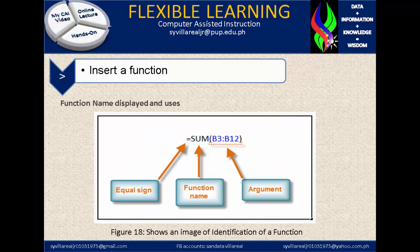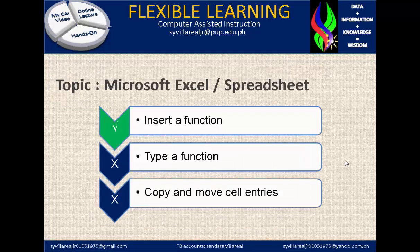Figure 18 shows an image of identification of a function. The figure itself has its function name displayed, such as the equal sign pointing to sum — the function name — and the argument, which is the delimiter. So right now we're finished with the function and how to insert it.